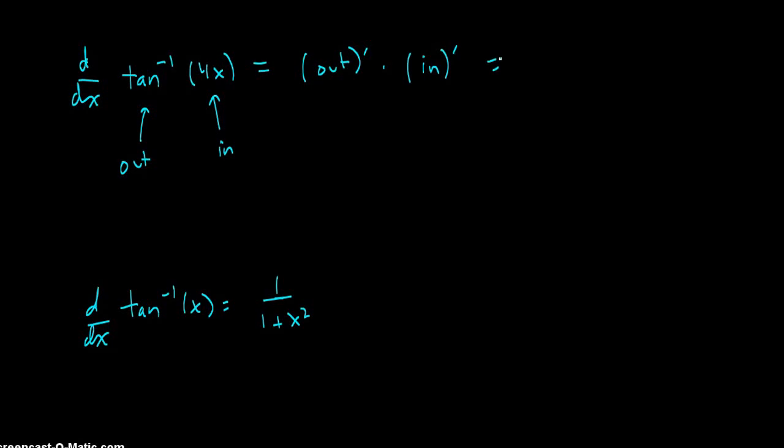In this case, the outside function, the inverse tangent, its derivative is 1 over 1 plus x squared. So, in this case, that becomes 1 over 1 plus 4x quantity squared. See the 4x goes inside where the x was.